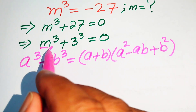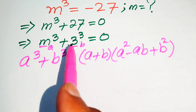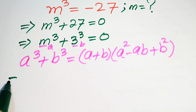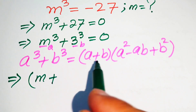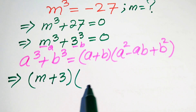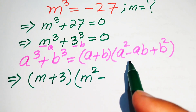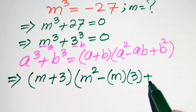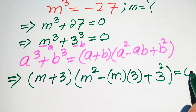Here we have a equals m and b equals 3. We now substitute the values of a and b into the cubic formula. When substituted, it is written as (m plus 3) times (m squared minus m·3 plus 3 squared) equals 0.